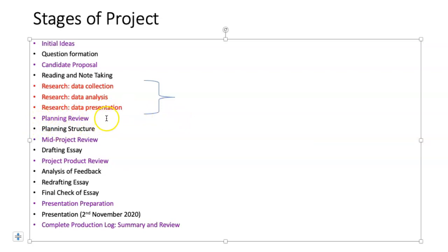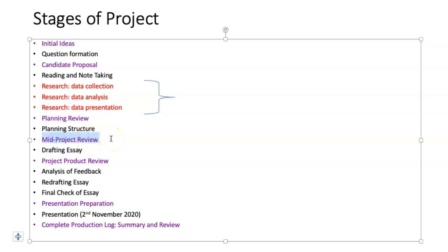The planning review is where we're at now, so you would put that into your planning. Then you'd have to show evidence of how you plan the structure. The mid-project review is very important — it's the next production log entry and it's where you will set the final title. At the moment in the candidate proposal you have a working title. Some of you will narrow down or change or nuance that title in the planning review section, and you have one final chance to change or modify the title at the mid-project review.